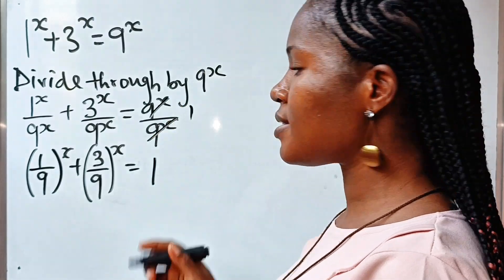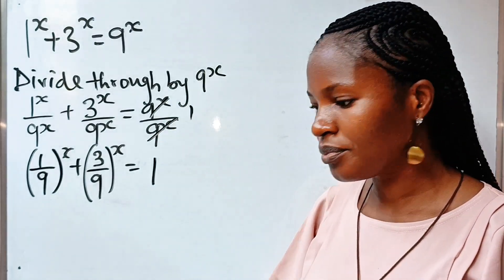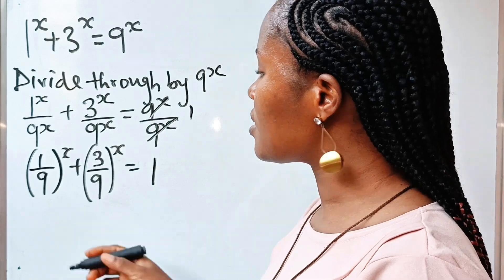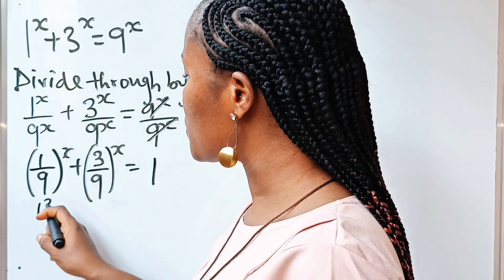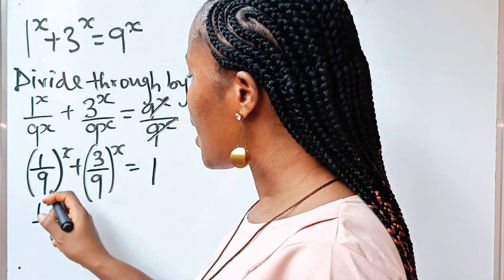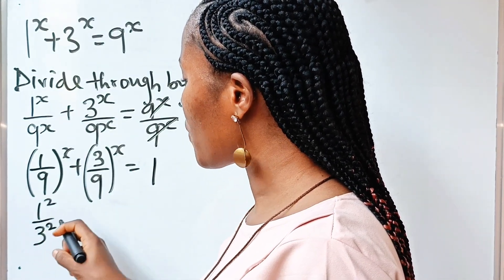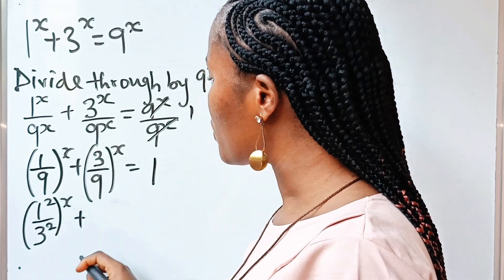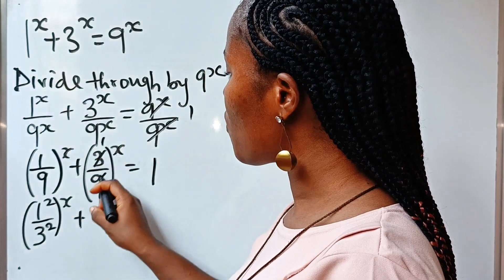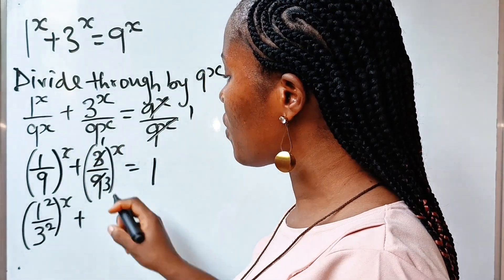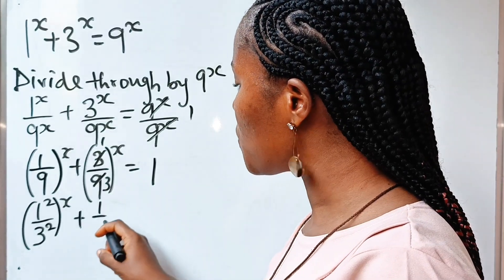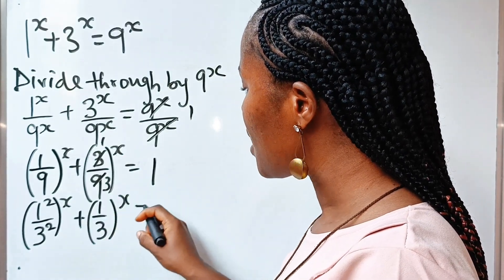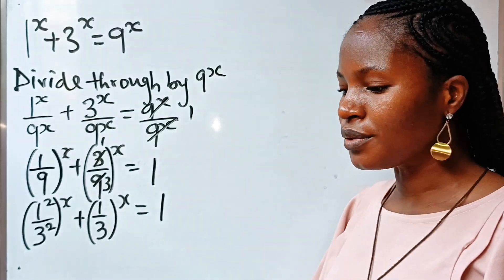Because when this divides itself, you will have 1. Now, recall that 1 is the same as 1 squared and 9 is the same as 3 squared. So 3 will divide itself and divide this to give us 3. What we have here is 1 over 3 raised to the power of x is equal to 1.